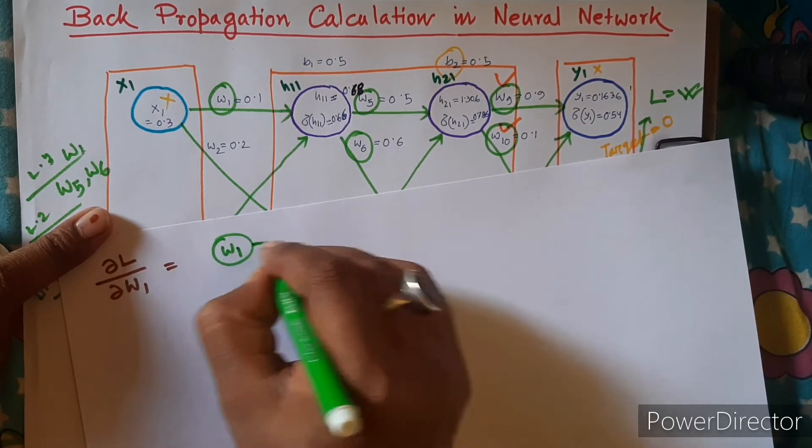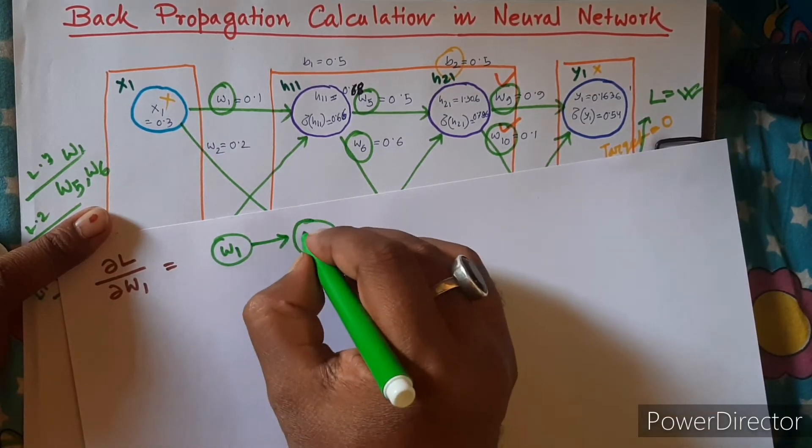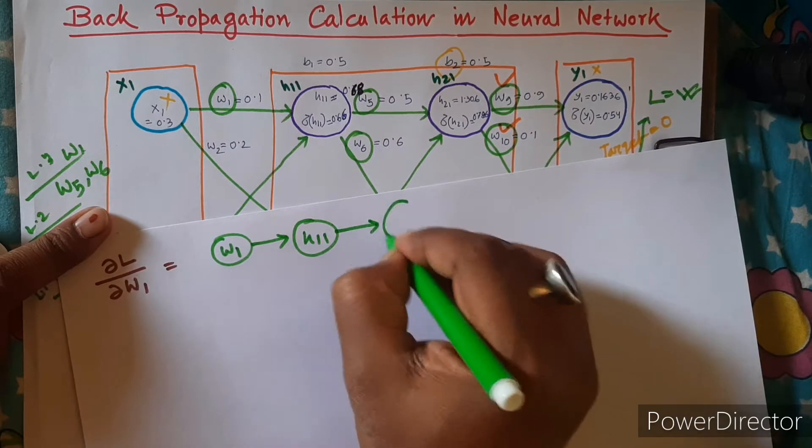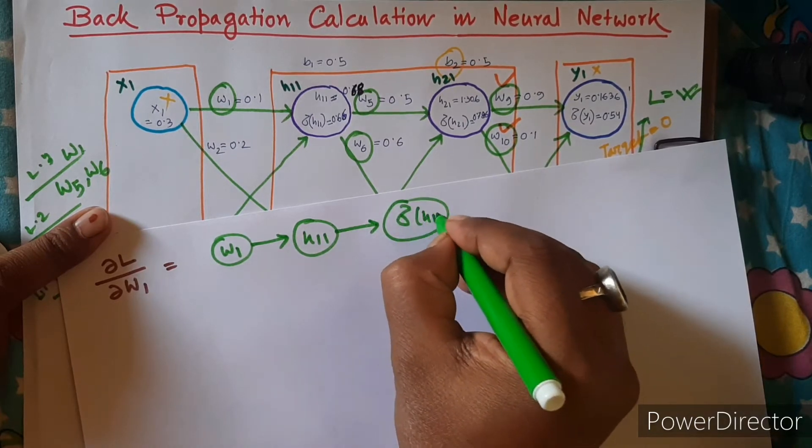The first part will be w1 to h11 to sigma of h11.